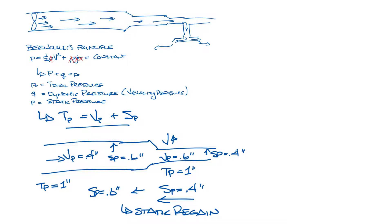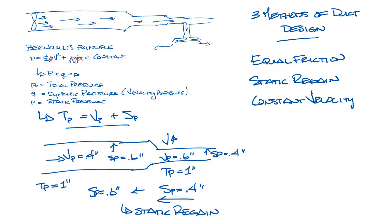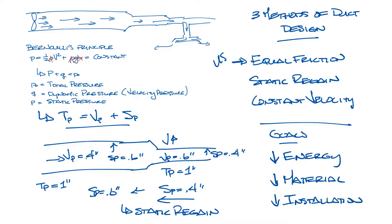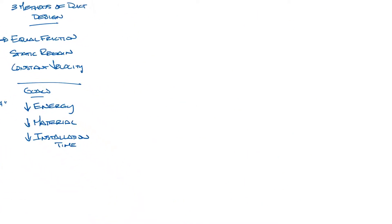In my example, I assume there's no friction loss, but that's obviously not how it works in real life. So let's look at that. There are three methods of duct design: equal friction, static regain, and constant velocity. In the US, we usually use equal friction. I'll save the details about how these methods work for a future video. But when we design a duct system, we want to minimize energy usage, material, and installation time.